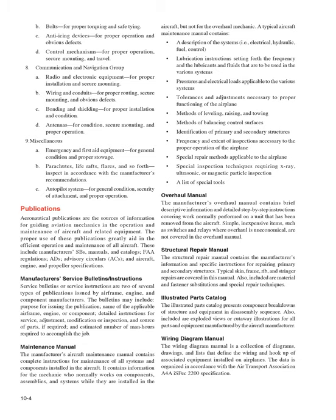Publications: Aeronautical publications are the sources of information for guiding aviation mechanics in the operation and maintenance of aircraft and related equipment. A typical aircraft maintenance manual contains a description of systems (electrical, hydraulic, fuel, control), lubrication instructions, pressures and electrical loads, tolerances and adjustments, methods of leveling and towing, methods of balancing control surfaces, identification of primary and secondary structures, frequency and extent of inspections, special repair methods, and special inspection techniques requiring x-ray, ultrasonic, or magnetic particle inspection, plus a list of special tools.